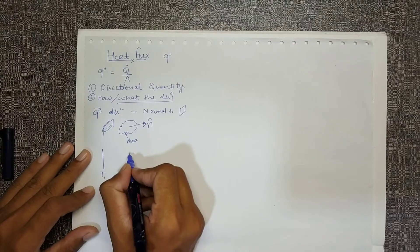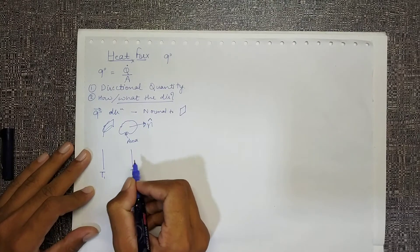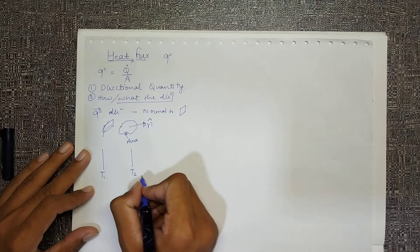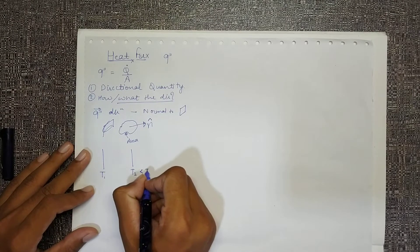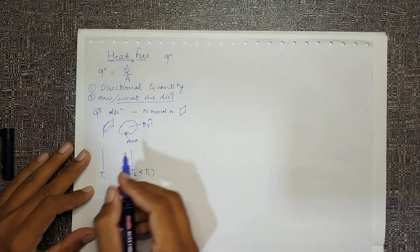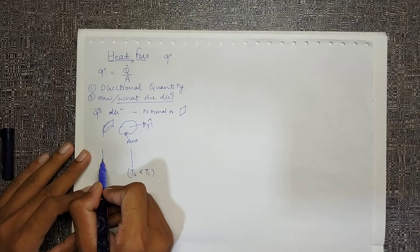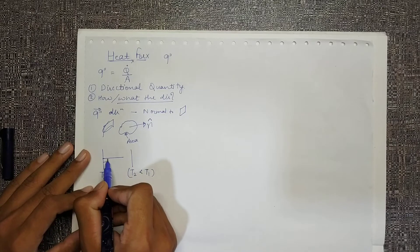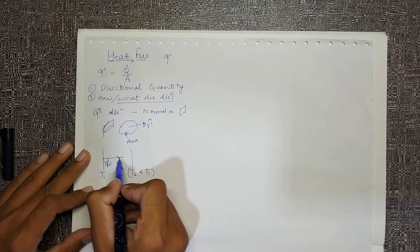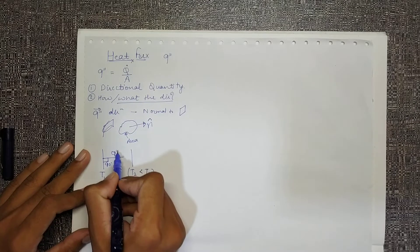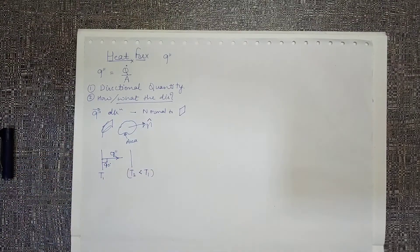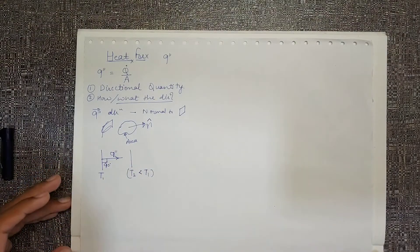That means if my surface is T1, another surface is T2 over here, and let's assume T2 is less than T1, that means my heat transfer will occur from T1 to T2 and the direction will be perpendicular. So this will be 90 degrees and this will be the direction of q double dash.